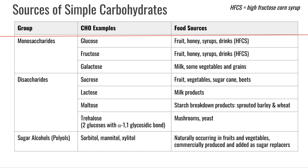Let's take a look at where we get some of these different types of simple carbohydrates. First the monosaccharides — glucose, fructose, and galactose. Glucose and fructose we get from fruit, honey, syrups, as well as drinks in the form of high fructose corn syrup. We'll talk a little later about how we make high fructose corn syrup. Galactose we get primarily from milk as well as some vegetables and grains, but really the main source is from milk.